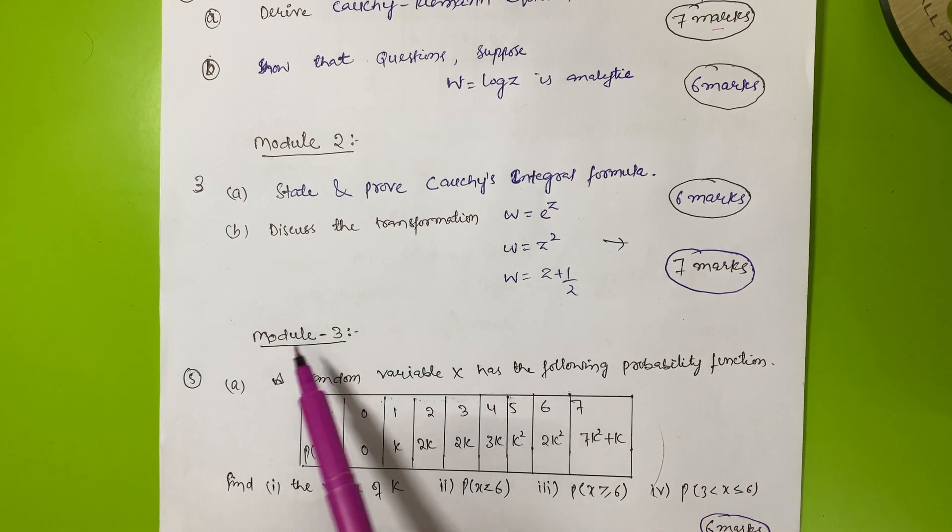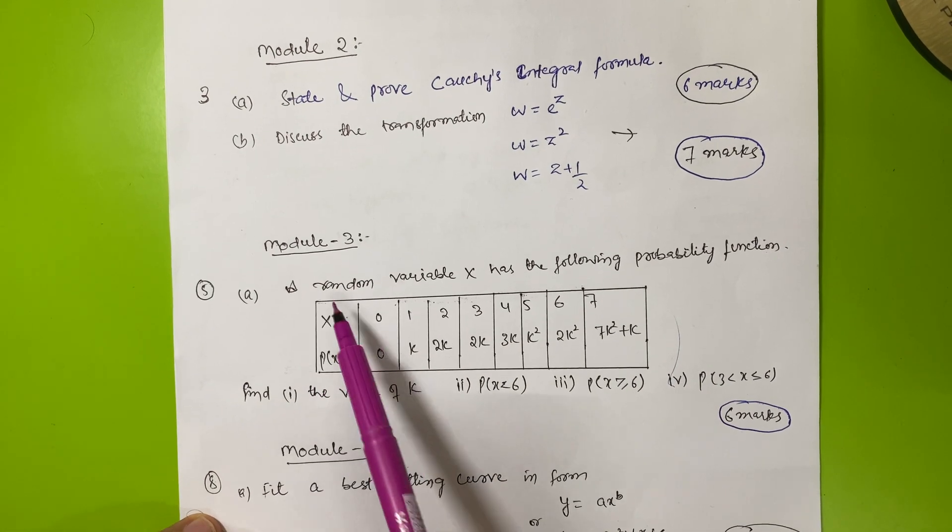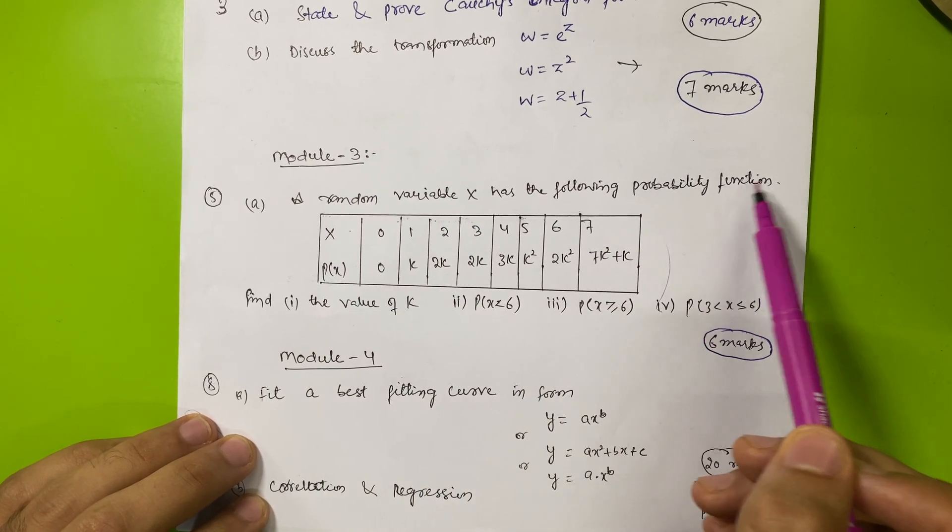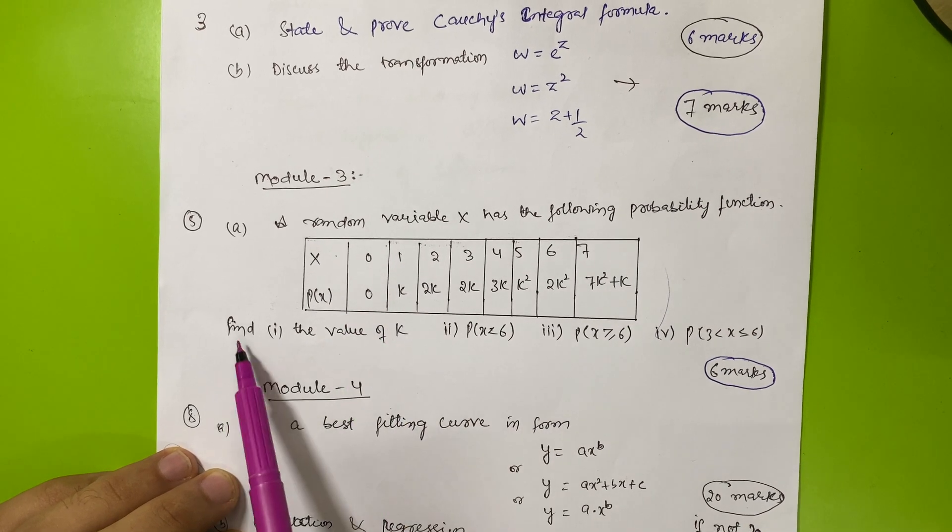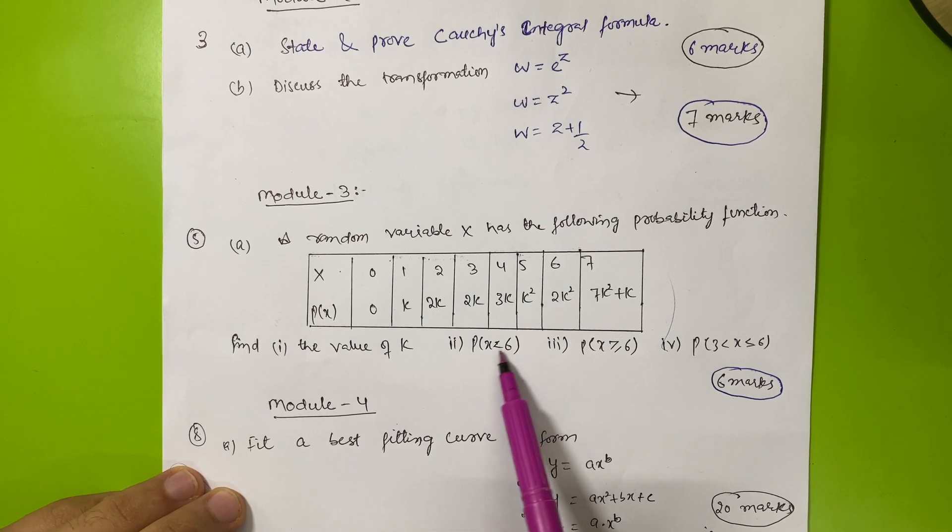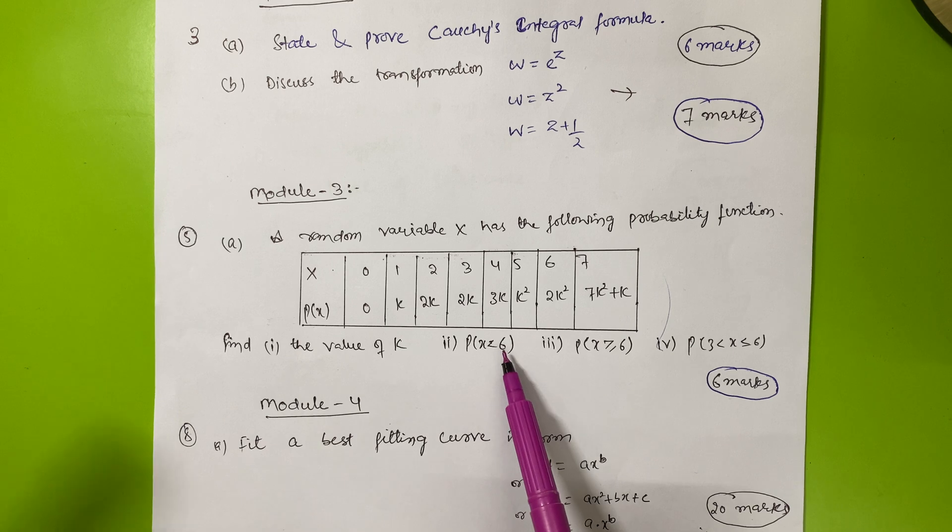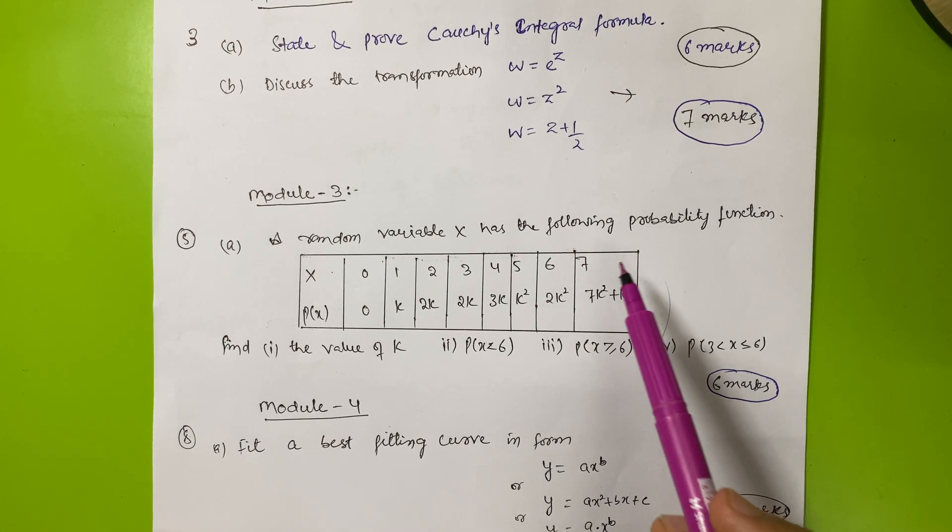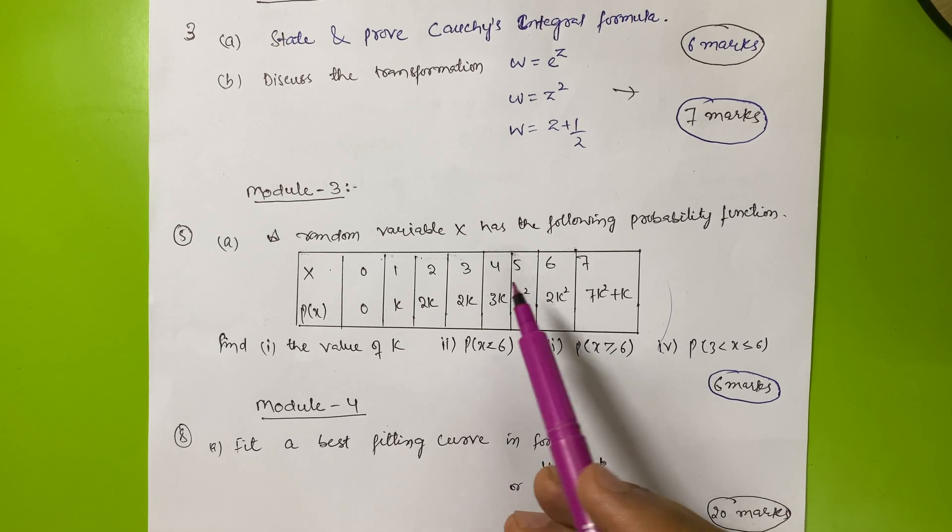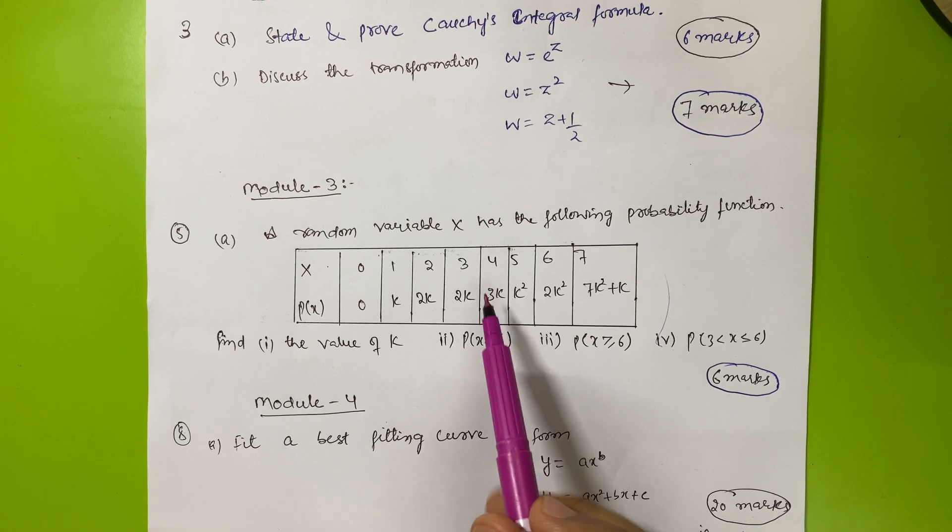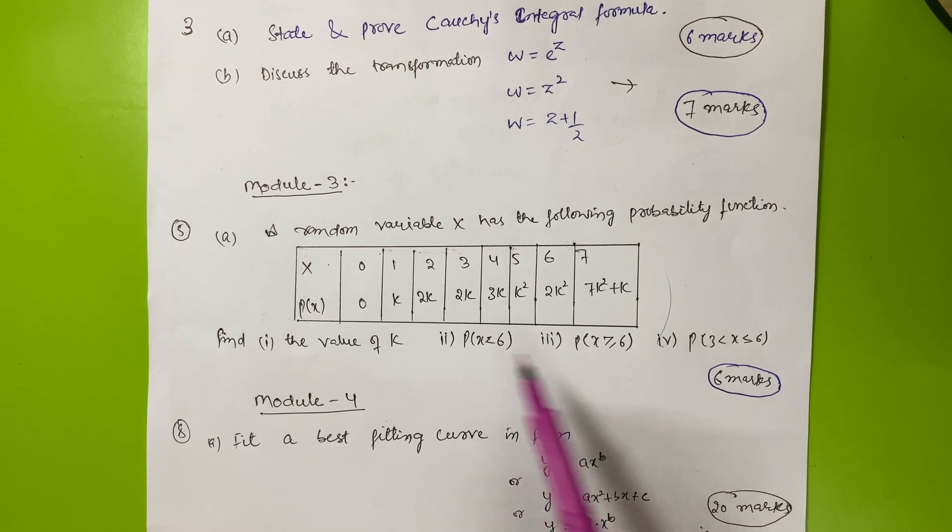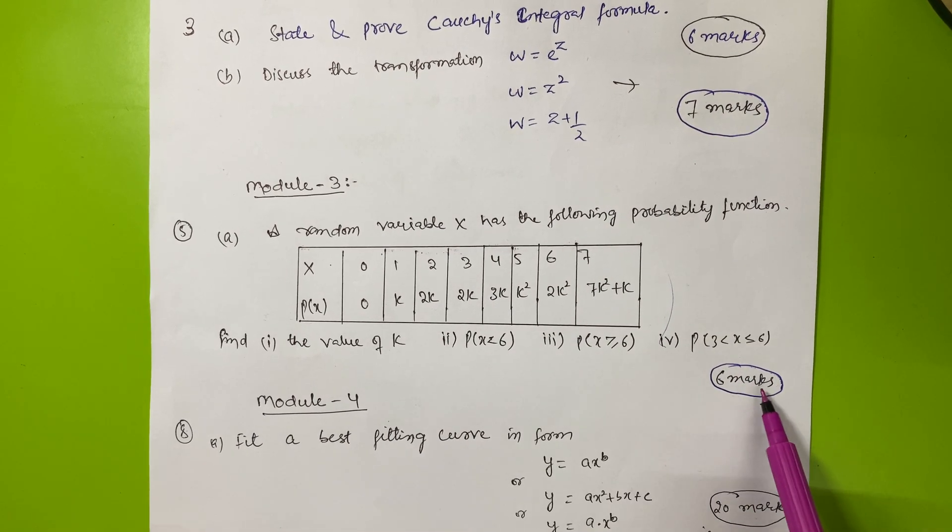Then module three comes. There is a question from probability function. A random variable X has the following probability function, so the table will be given. You have to find value of k and P of X less than six. I have taken this question from the 2021 paper. They may change the values but the concept is easy. This carries six marks.